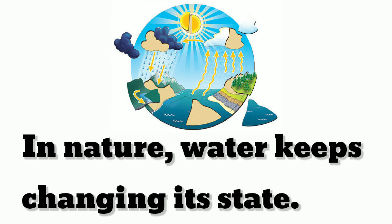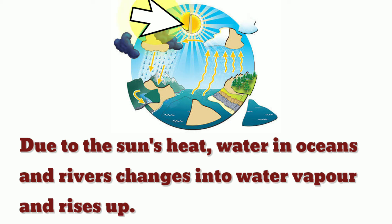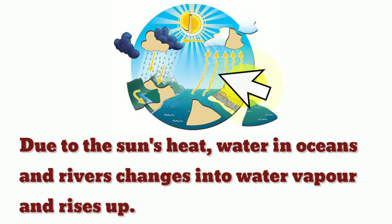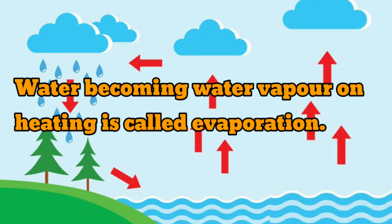In nature, water keeps changing its state. Let's see how this happens. Due to the sun's heat, water in oceans and rivers changes into water vapour and rises up. Children, suriainin veppatthi nal, arugal matruum perungadal galil ull la niranadu, niraviyagamari mele chilgradu.